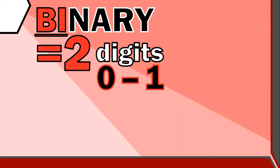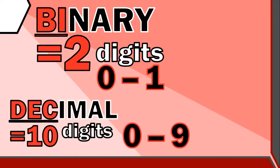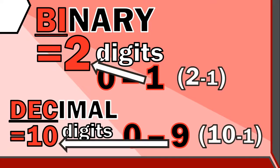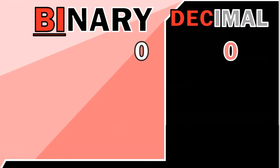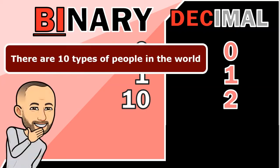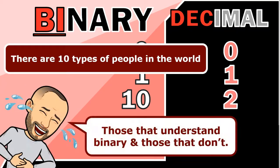With the binary system we only have two different digits: a zero or a one. Notice that with number systems, the possible digits range from zero up to one less than the system's number. A zero and a one are the same in both decimal and binary. The problem comes when we reach two in decimal — we've run out of binary digits, so we need a new column. That's also why people don't always get my joke: 'there are 10 types of people in the world — those that understand binary and those that don't' — because that 10 is actually one-zero in binary, which equals two.